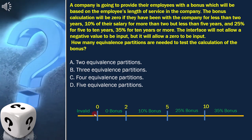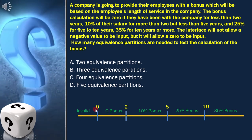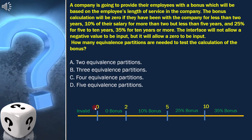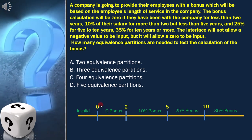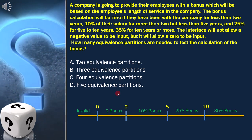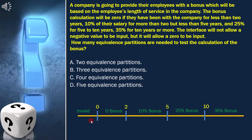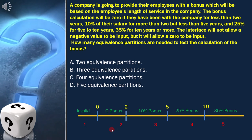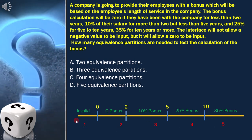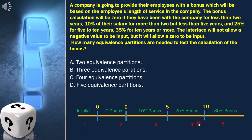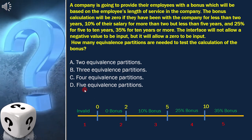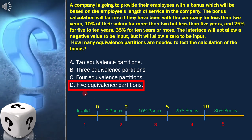How many equivalence partitions are needed to test the calculation of the bonus? From the diagram, it's clear that we need five equivalence partitions. Therefore, option D is the answer.